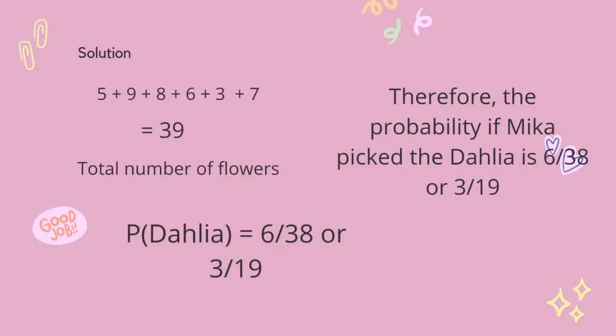Solution: Add all the numbers — 5 plus 9 plus 8 plus 6 plus 3 plus 7 equals 38, the total number of flowers. So P(dahlia) equals 6 over 38, or 3 over 19. Therefore, the probability of Mika picking a dahlia is 6 over 38 or 3 over 19.